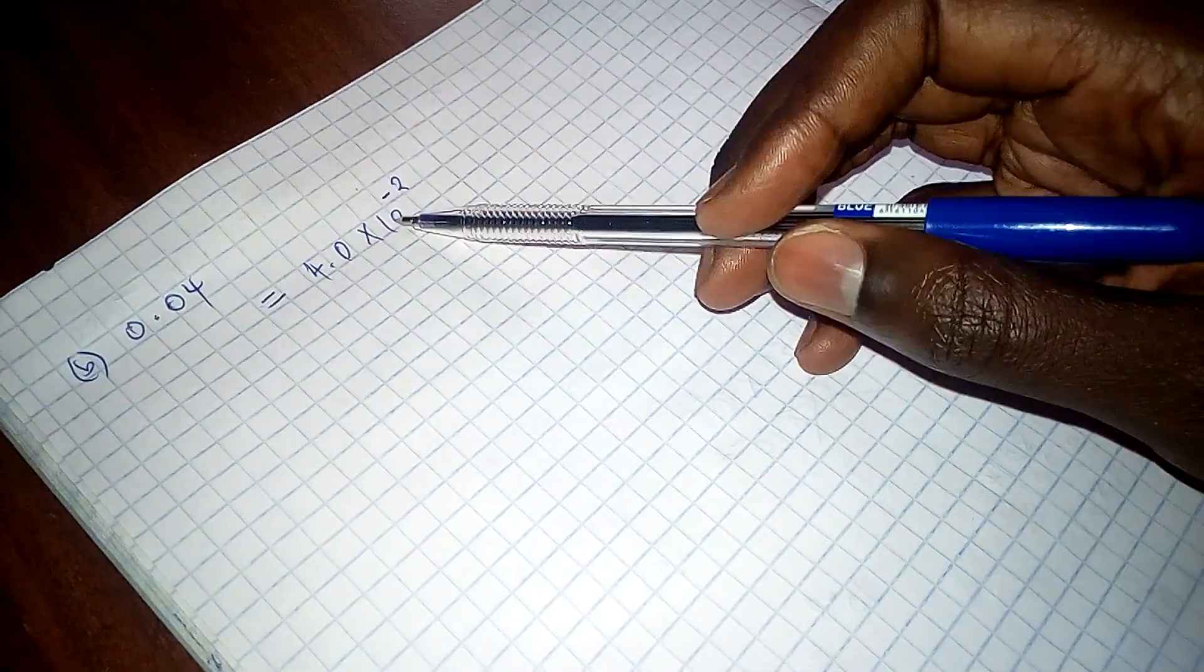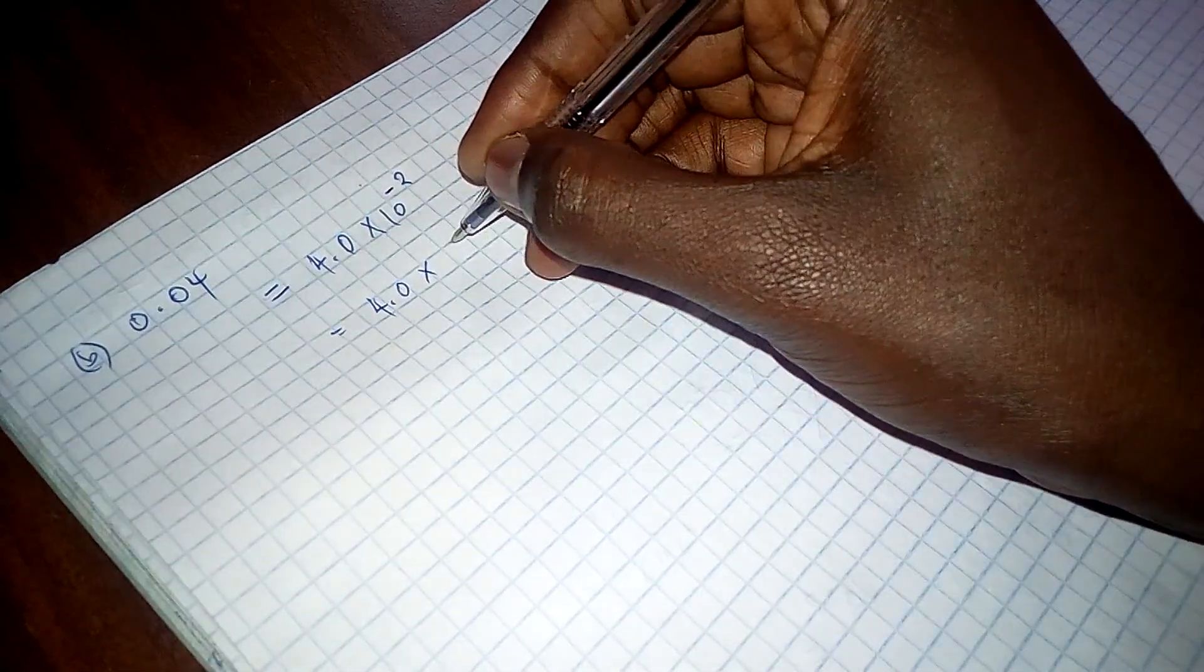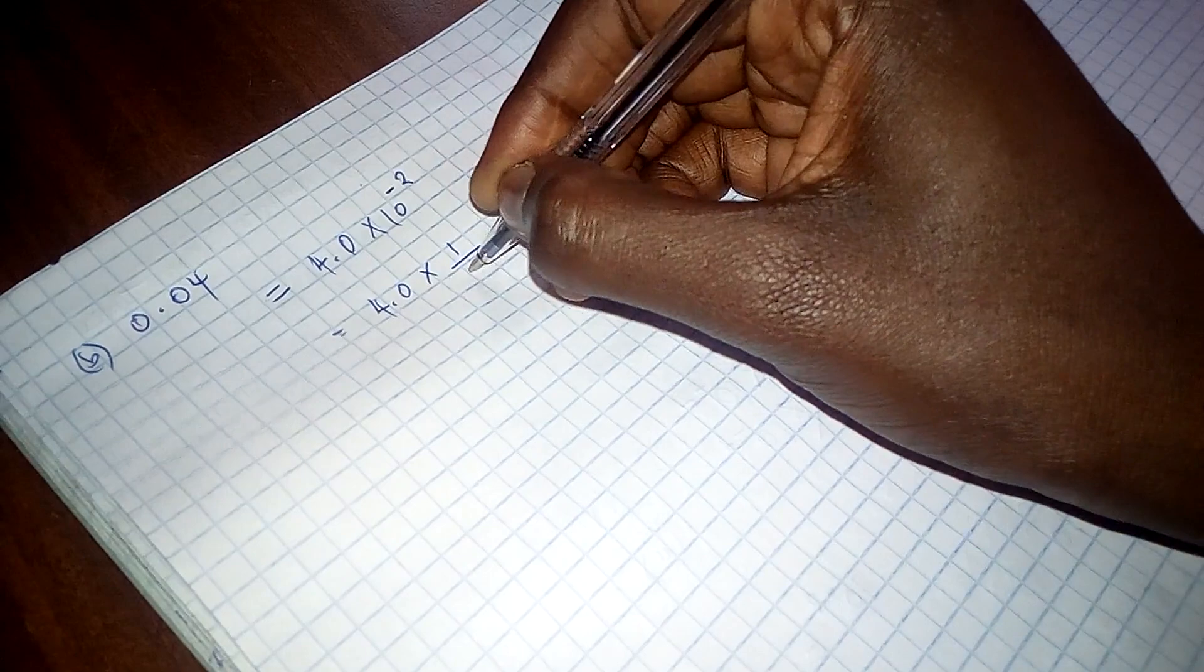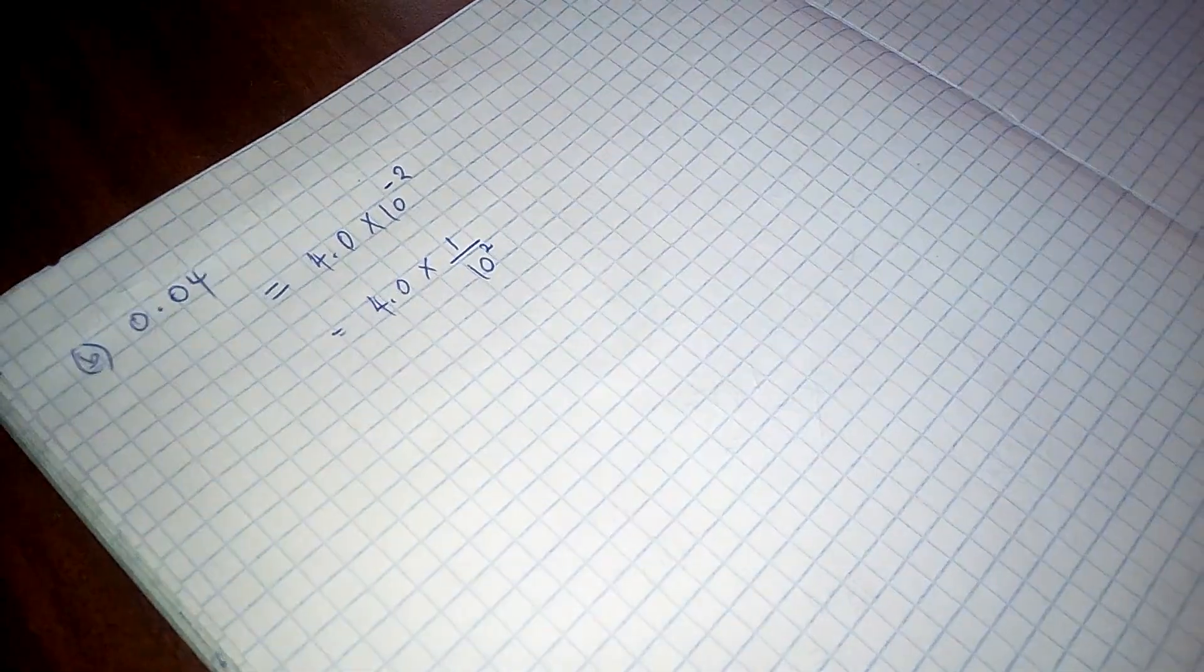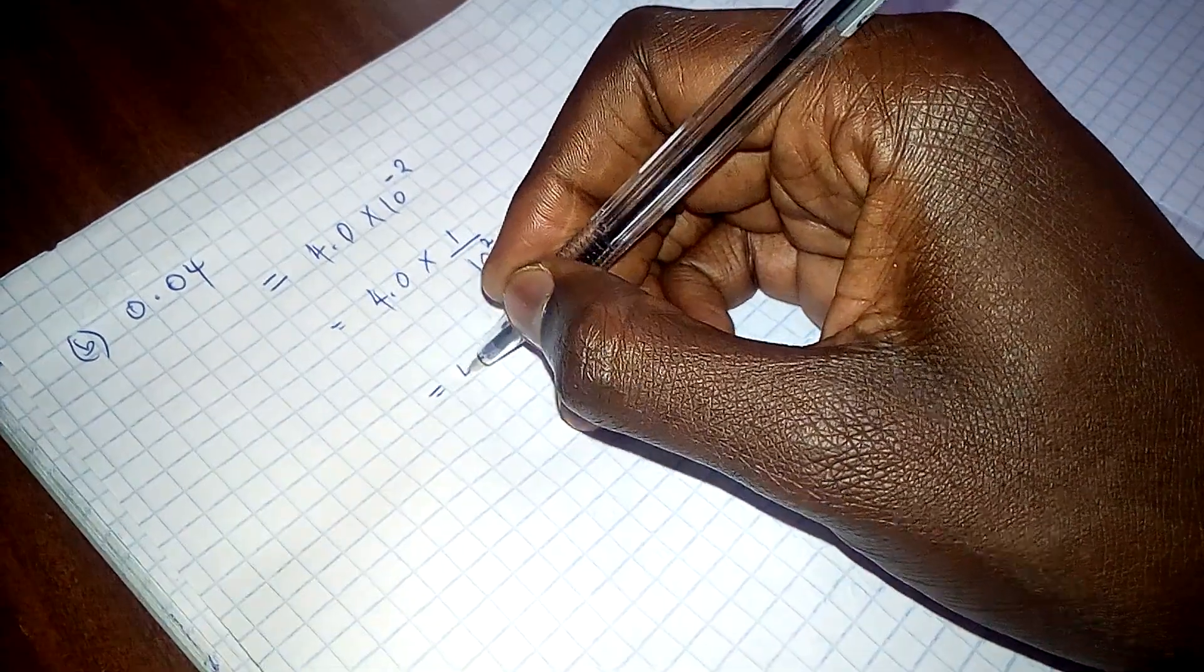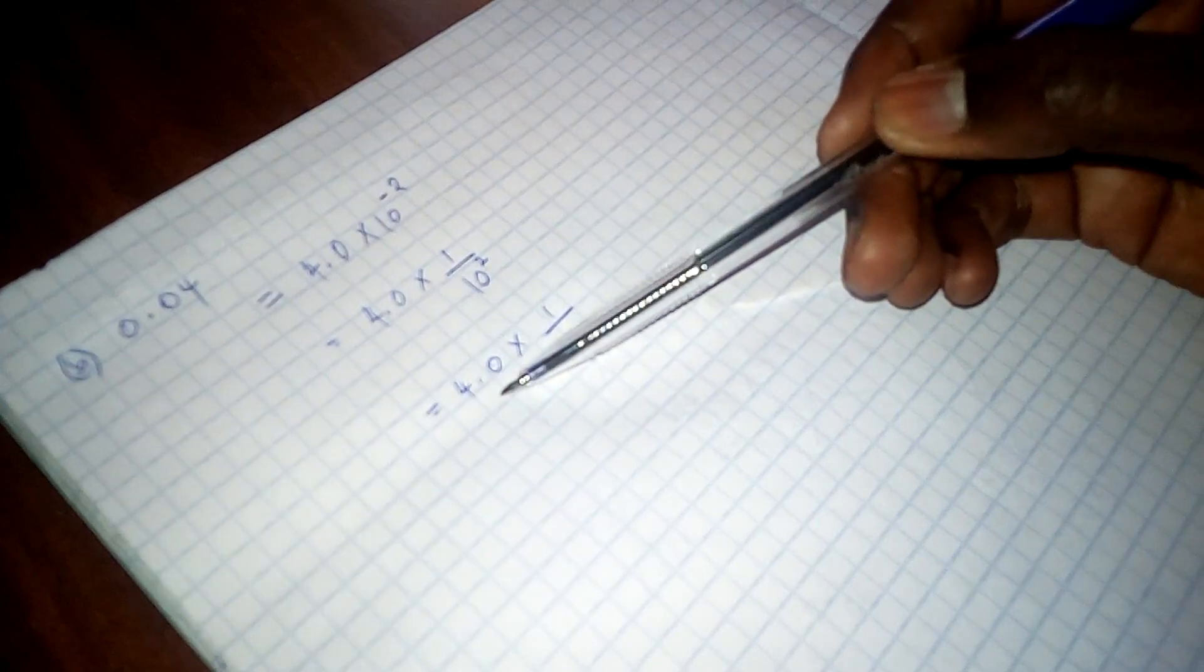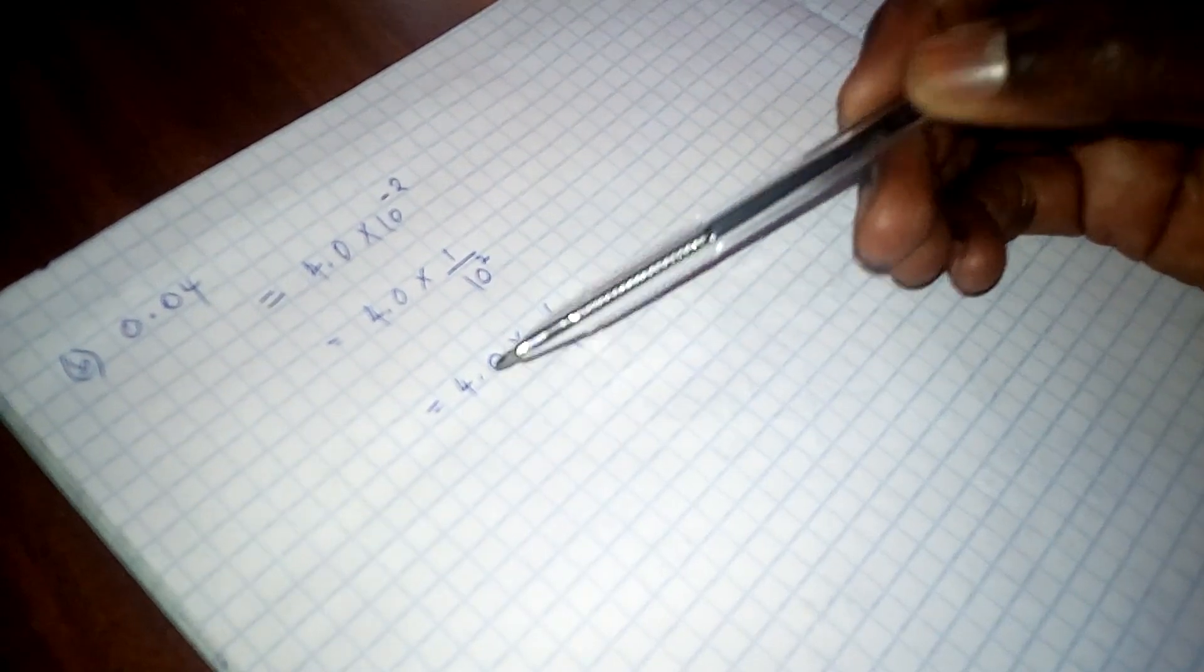So this number can also be written as 4.0 times 1 all over 10 squared. So this again can be written as 4.0 times 1 over 100. We are going to get the square root of this from the mathematical table.